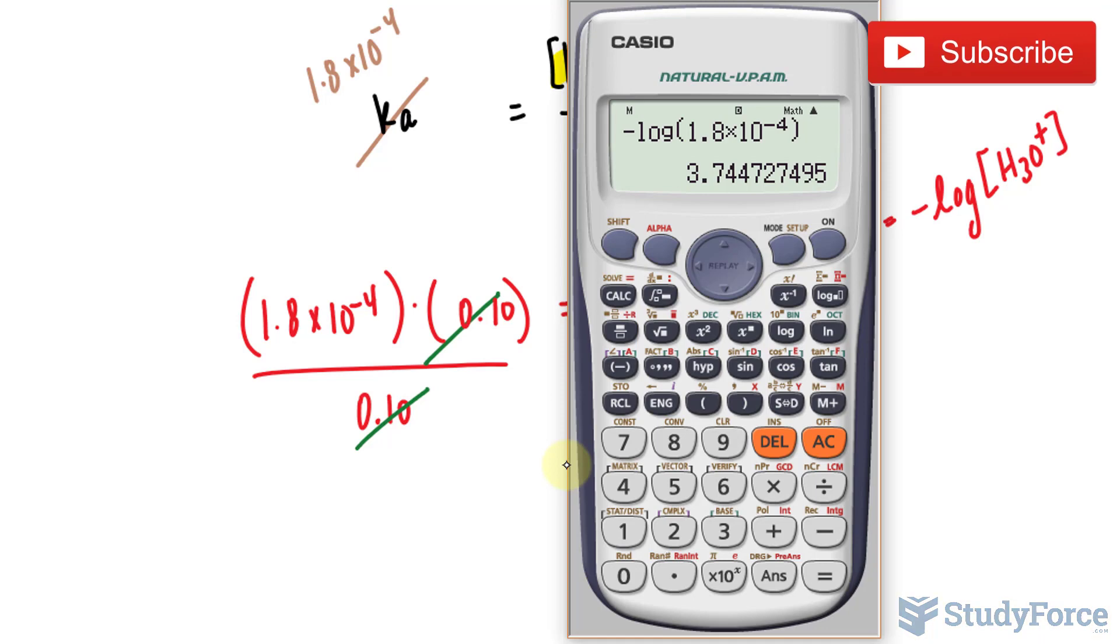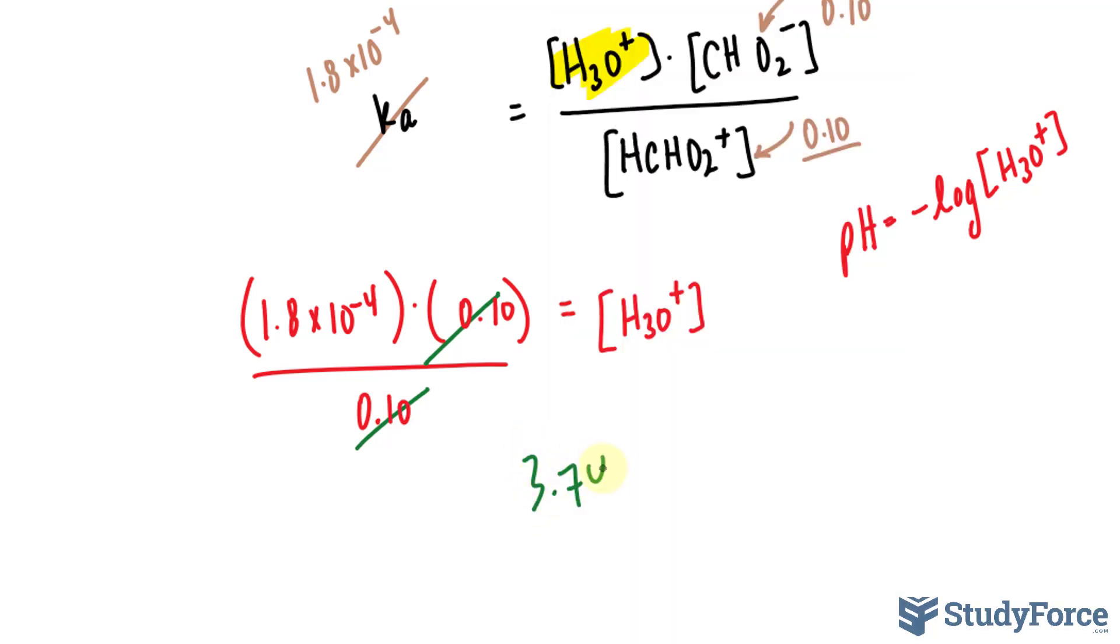Now remember, when you find the log of a number, in our case 1.8, that's two significant figures, and that translates to two significant figures after the decimal place of your answer. So we should have 3.74, not 3.7. 3.74 is the pH of the solution.